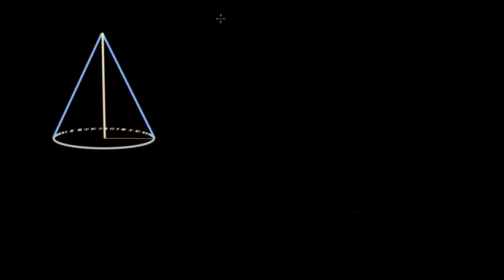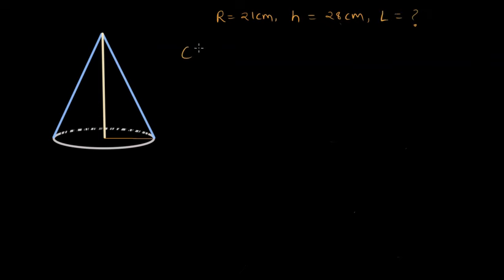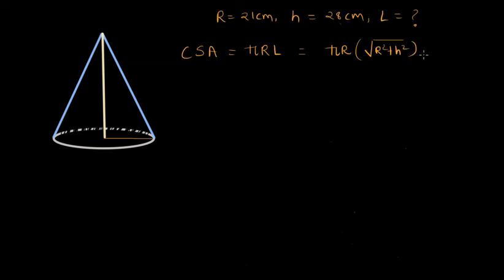Let's find the surface area of a cone where the radius is 21 centimeters and the height is 28 centimeters, with the slant height unknown. The curved surface area of a cone is given by π × r × l. Since we don't know l, we substitute the formula l = √(r² + h²) and plug in the values to find the curved surface area.